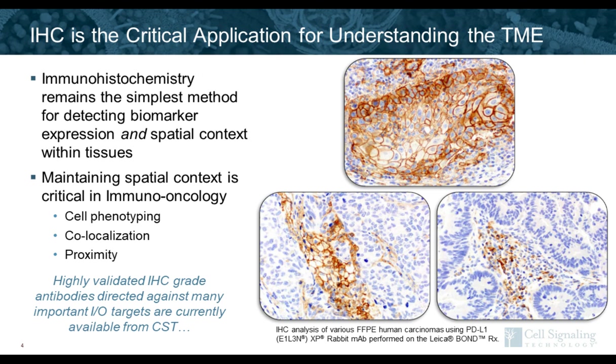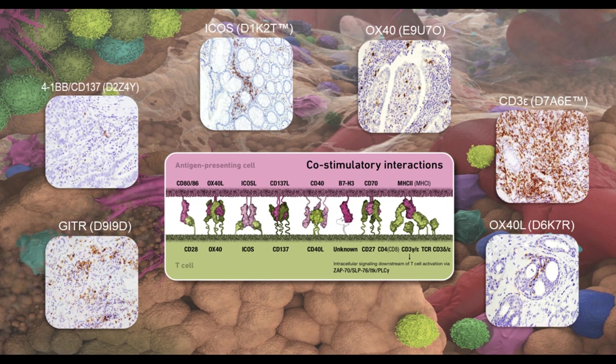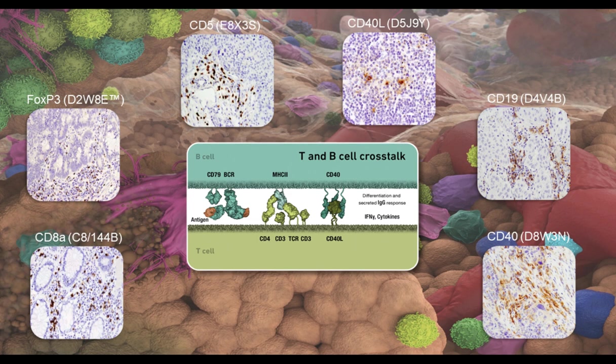To perform even a simple single-plex chromogenic IHC assay, highly validated antibodies are required. CST has highly validated IHC-grade antibodies for a number of immuno-oncology targets. These include co-inhibitory molecules such as PD-1, TIM-3, and LAG-3, which are expressed on T-cells, as well as B7H3 and B7H4 expressed primarily on tumor cells. We also have co-stimulatory molecules in our catalog such as ICOS, GITR, and 4-1BB, which are in the clinic and expressed mainly on T-cells, along with pan-T-cell markers CD3, OX40, and OX40L.